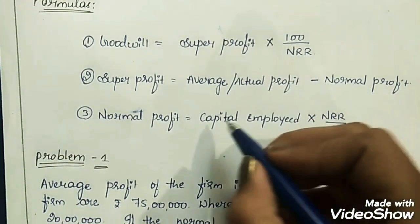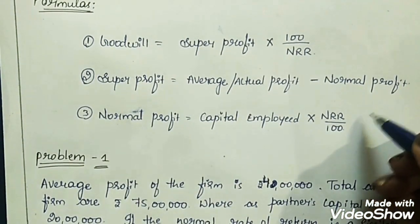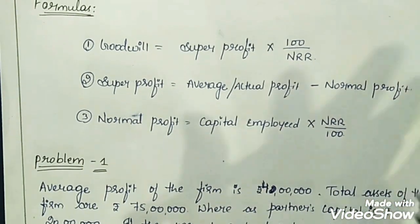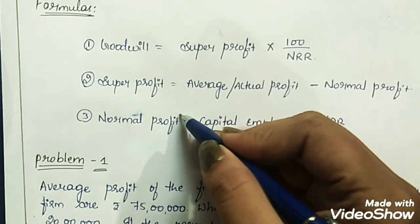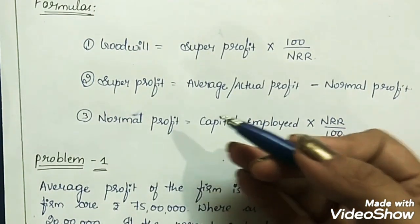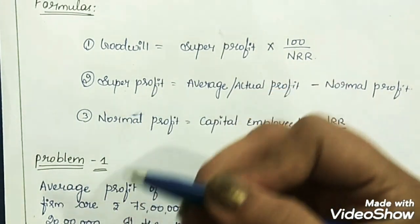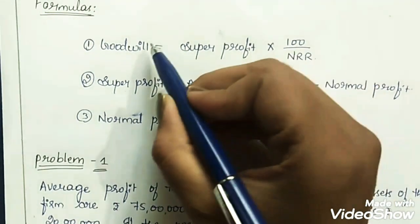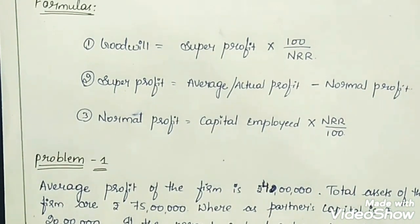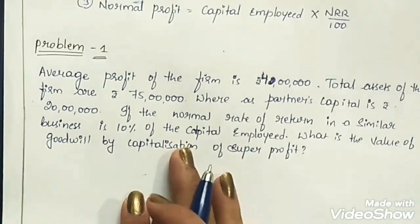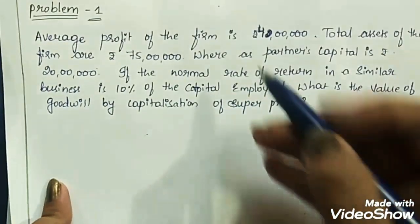NRR means Normal Rate of Return. Capital employed and the rate will both be given in the question. So basically, first we find normal profit, then use it to find super profits, and once we have super profits we can easily find the goodwill.